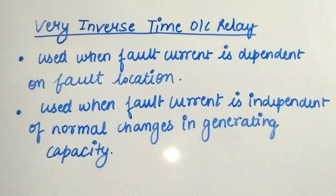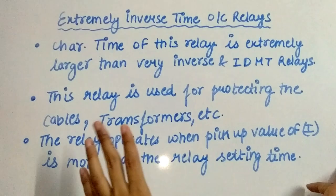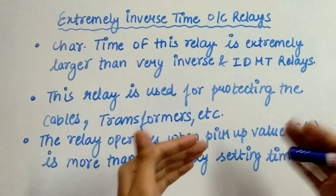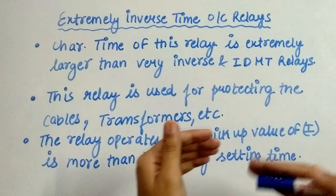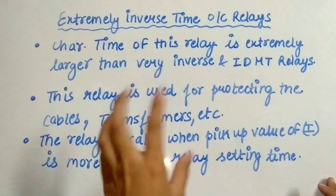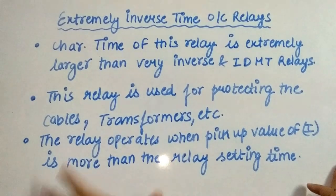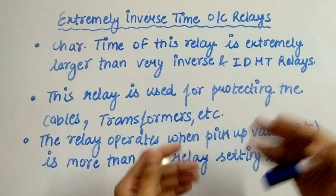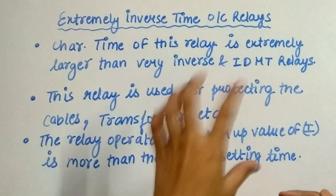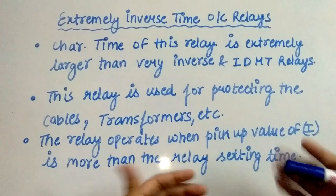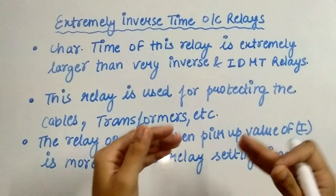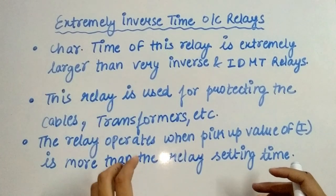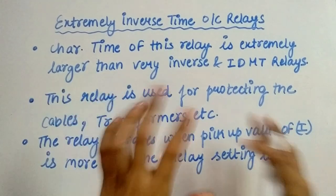Extremely inverse time overcurrent relays have a characteristic time that is much larger compared to IDMT relays and very inverse time relays. This relay is used to protect cables and transformers. It can operate instantly if the pickup value of the current exceeds the relay setting time. This relay provides faster operation even under fault current conditions, and is also used to sense machine overheating. Inverse time relays are used in distribution networks and power plants, providing fast operations under fault conditions because of their fault time characteristics.